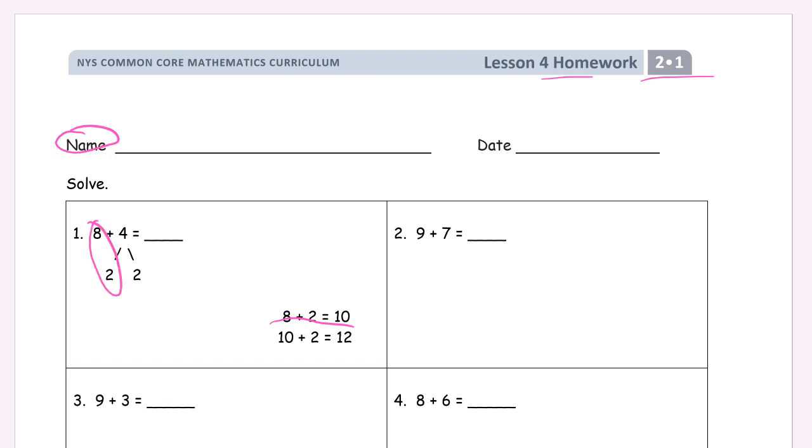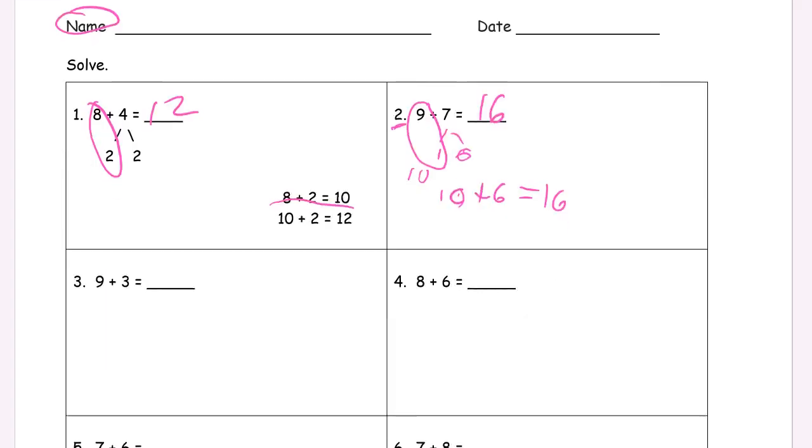There's your 10. 10 plus 2 is 12. 9 plus 7. We're looking at number 2 now. 9 needs a 1 to make 10. So 7 is a 1 and 6 more. There's our number bond for 7. There's our 10. And you can write it out. 10 plus 6 equals 16. And that shows your work there.